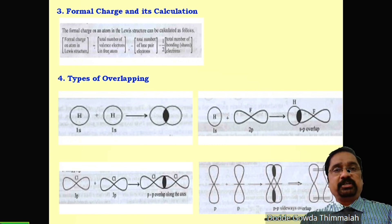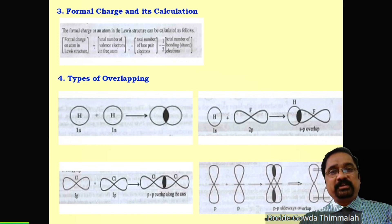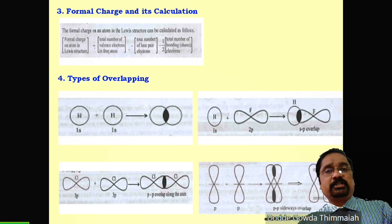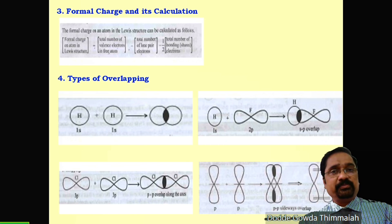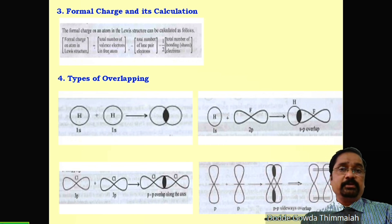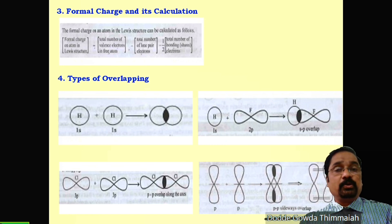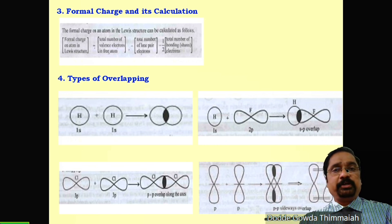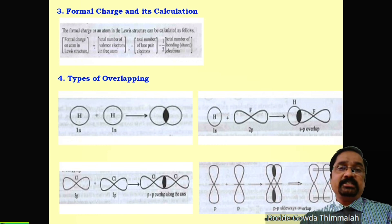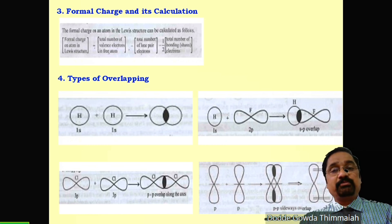If you want to know the charge on an atom in a molecule, there is a solution: formal charge. Formal charge is equal to the number of valence electrons in a free atom, minus the number of lone pair electrons (unshared pair), minus one-half times the number of bond pair electrons. This gives you the formal charge.